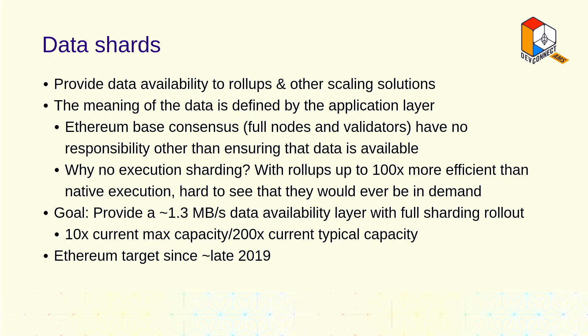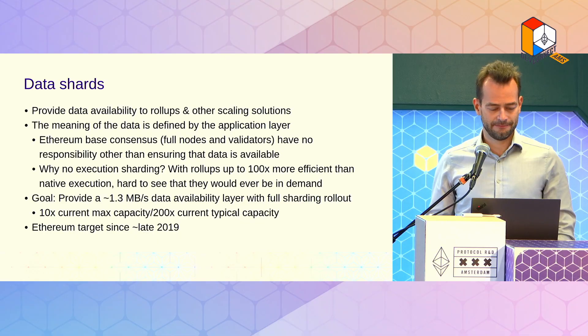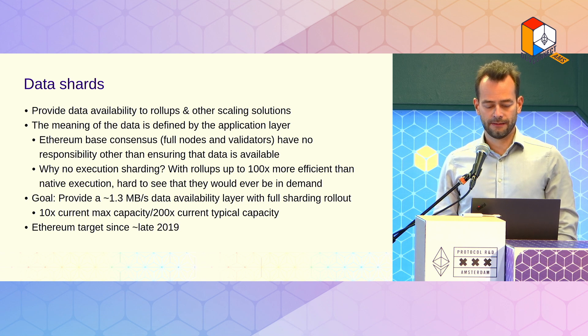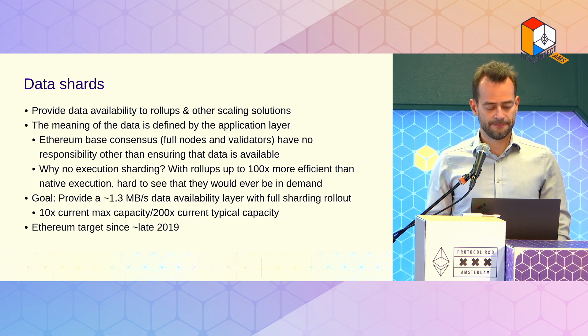Data shards. The idea of data shards is to provide data availability for rollups. The meaning of the data is no longer defined by the consensus layer, but instead will be defined in the application layer, and Ethereum base layer consensus in the future will have no responsibility other than ensuring that this data is available. We've changed this from the original plan several years ago, which was execution sharding. We know that rollups are about 100 times more efficient than native execution, so it's hard to see that execution shards would ever be in high demand.